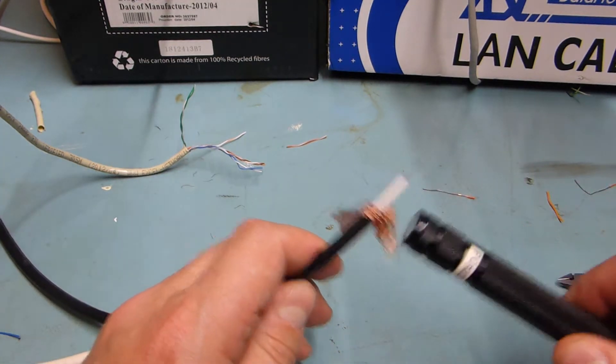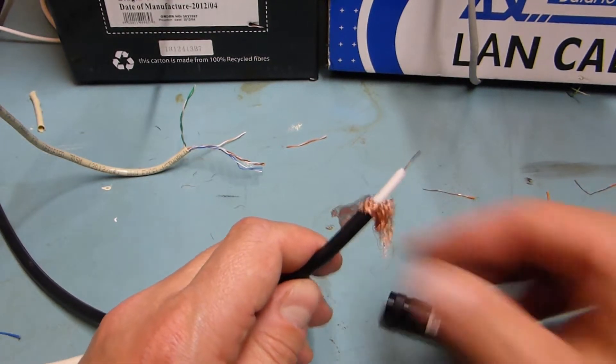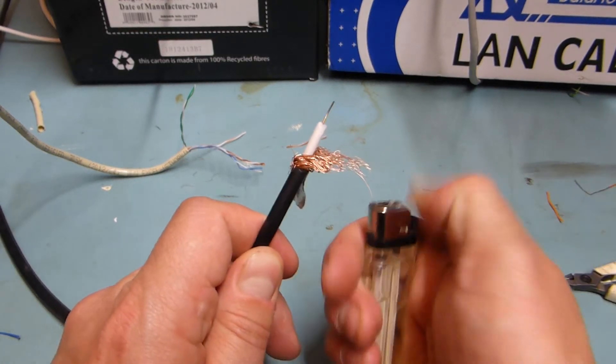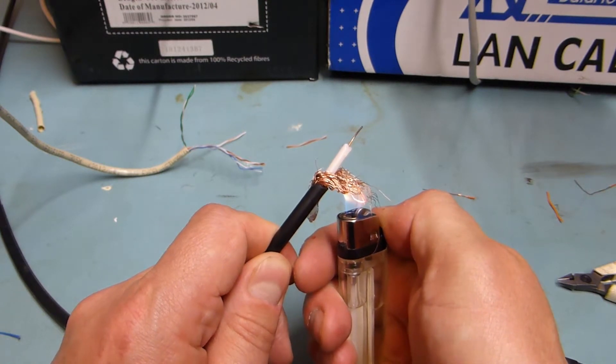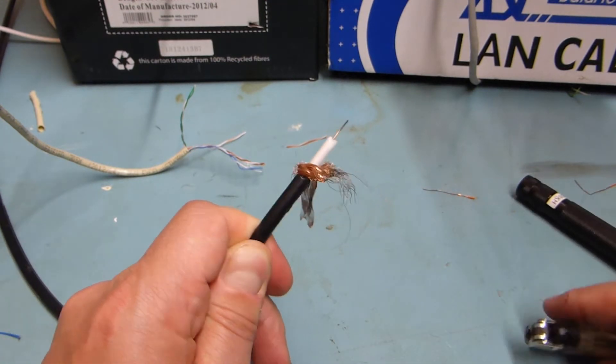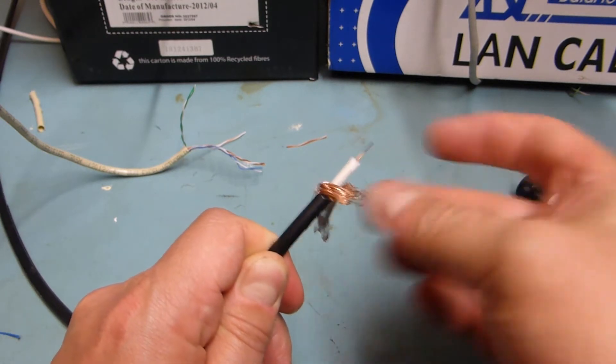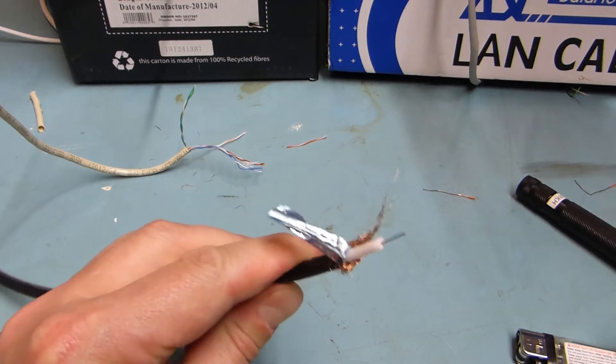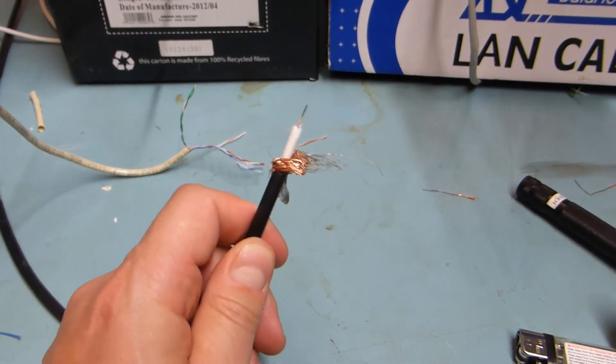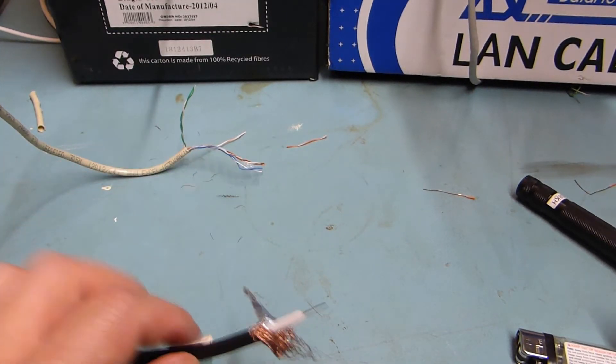So this is potentially less of a problem. The braid seems to be made from copper I think. Possibly steel. Difficult to tell actually, it might be aluminum. Yeah, so RG59, I'd rather have it as solid copper but probably less of a problem. But anyway